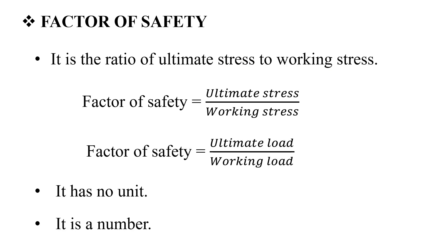Next, we will talk about factor of safety. What is factor of safety? It is the ratio of ultimate stress to working stress, or equivalently ultimate load divided by working load. It has no unit and is a dimensionless number.